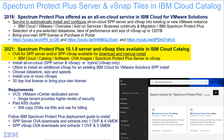In conclusion, I've shown you the new Spectrum Protect Plus 10.1.8 Server and vSnap tiles in the IBM Cloud Catalog, and how you can download them and then do manual installations of the Spectrum Protect Plus Server and/or vSnap. Thank you very much.